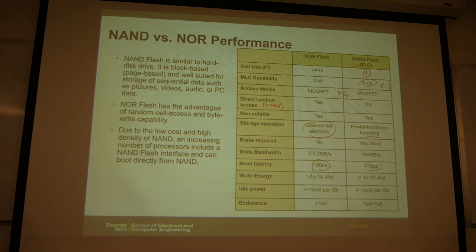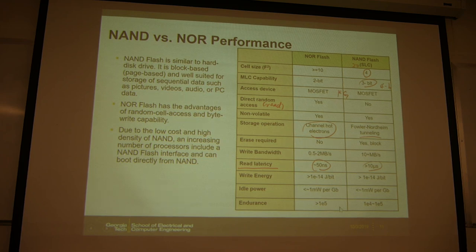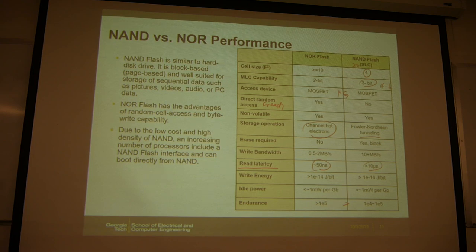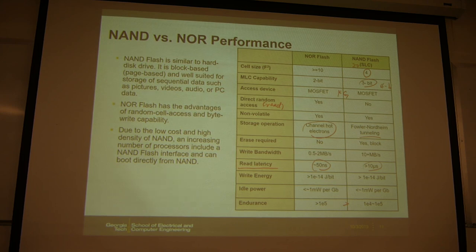Read latency is the key difference between NOR and NAND. For the rest — write energy, power, and endurance — they are fairly similar, though NOR endurance is slightly better than NAND. Endurance again refers to how many cycles you can write the data.